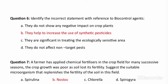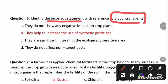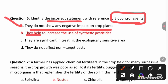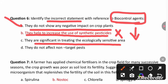Identify the incorrect statement with respect to biocontrol agents. Biocontrol agents are a biological method to control plant diseases. The incorrect statement is: they help to increase the use of synthetic pesticides — because in fact, use of biocontrol agents decreases the use of synthetic pesticides. They do not show any negative impact on crop plants, are significant in treating ecologically sensitive areas, and do not affect non-target pests. These are all correct statements. Option B is the incorrect statement.